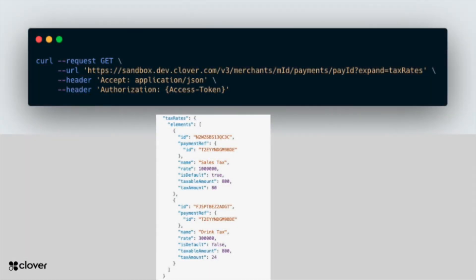Here are screenshots of the taxes on the Clover order from a REST API. The REST API is calling the payment and expanding the tax rates. The JSON response will display the tax rates on the payment. Please note, if the merchant has multiple tax rates, they will each display on the JSON response with their name, percentage, and what amount was charged.